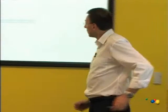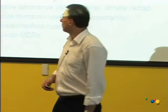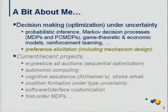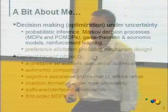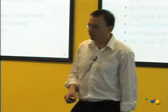Before I get into my talk, which is on regret-based preference elicitation and mechanism design, let me say a couple of words about myself. As Peter mentioned, I've done a lot of work in Markov decision processes, both fully and partially observable. Generally speaking, I'm interested in any problem that has to do with decision making or optimization under uncertainty in its many various guises. That includes game theoretic and economic models more recently, and over the last three or four years a lot of my work has focused on preference elicitation, which relates to mechanism design in ways I hope will become clear.